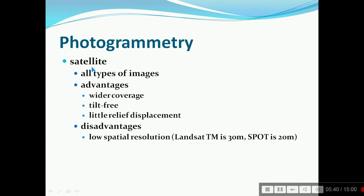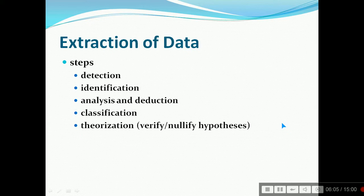If we talk about satellite, all types of images are there. Advantages are wide coverage, tilt-free, and relief displacement is very little or acceptable to the user. Disadvantages are also there: it has low spatial resolution, like Landsat Thematic Mapper is 30 meters and SPOT is 20 meters, but it has improved a lot in the present day.